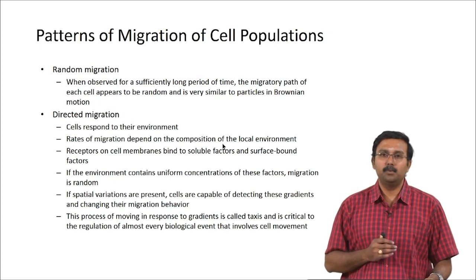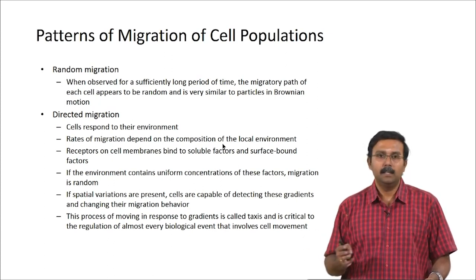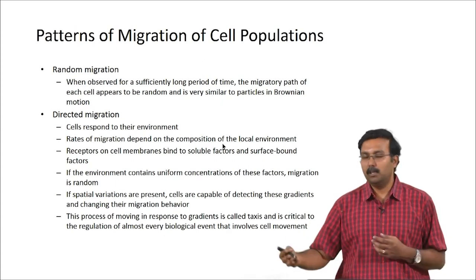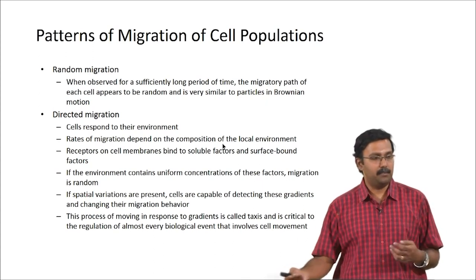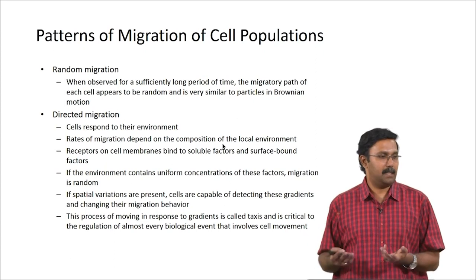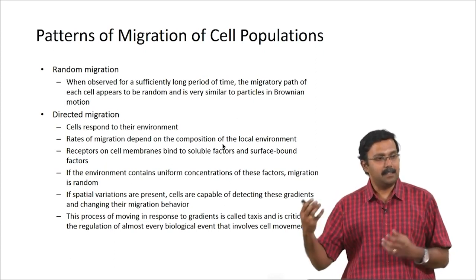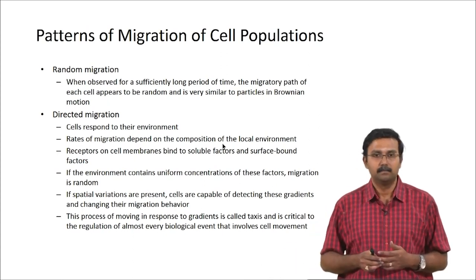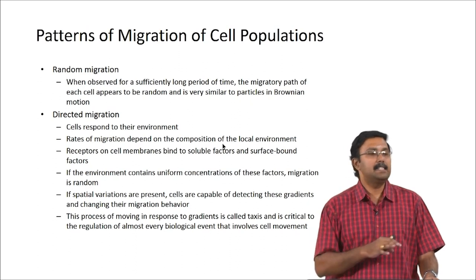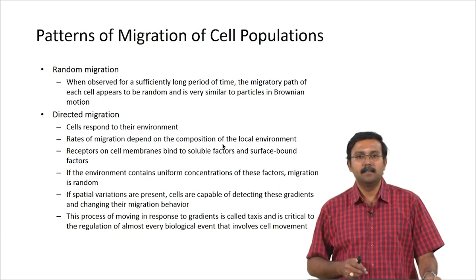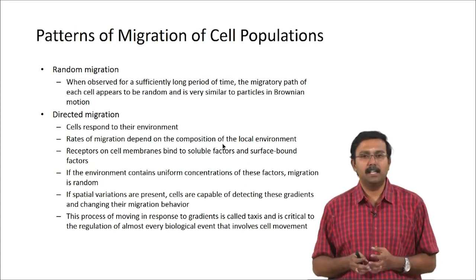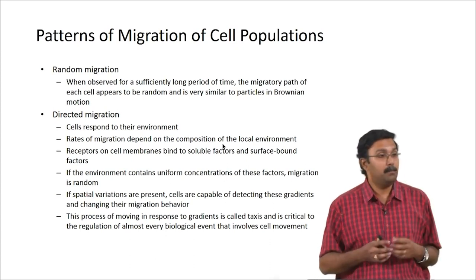Directed migration happens when cells respond to their environment. The rate of migration depends on the composition of the local environment, whether the receptors are present, and what soluble or surface-bound factors are present. If the environment contains a uniform concentration, migration becomes random. If you have one region rich in ligands, you might have directed migration. If spatial variations are present, cells are capable of detecting these gradients and changing their migration pattern towards these attractants. This process of moving in response to a gradient is called taxis, and it is critical for the regulation of any biological event involving cell movement.